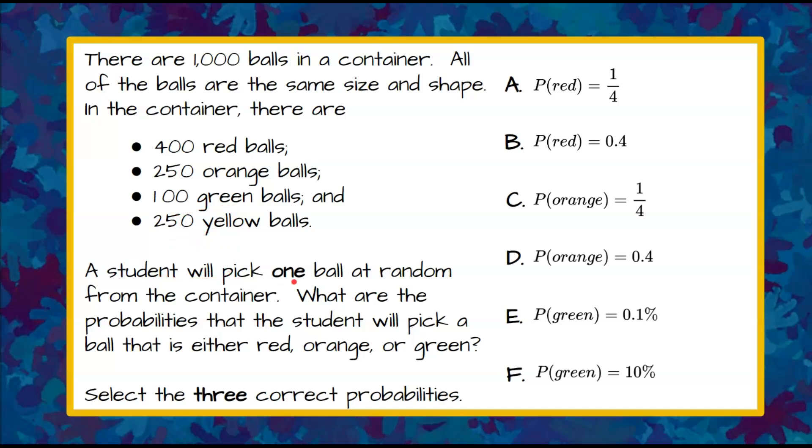A student will pick one ball at random from the container. What are the probabilities that the student will pick a ball that is either red, orange, or green? We're asked to select the three correct probabilities from these six choices. Go ahead and pause the video now and come back when you're ready to check your work.